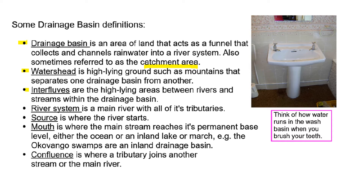The interfluve is also a high-lying area, but it is within the drainage basin, and it separates one tributary from another. The river system is the whole system of the river — the main river plus all of its tributaries.